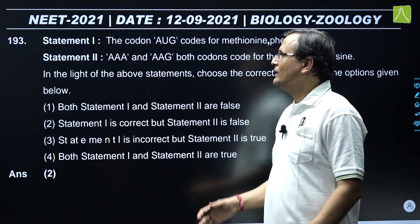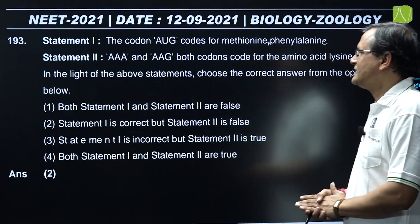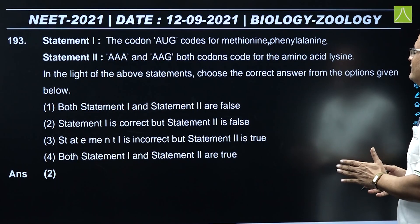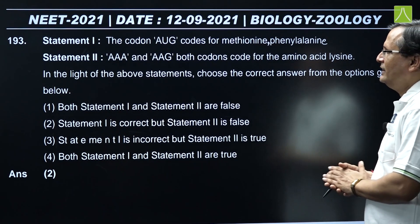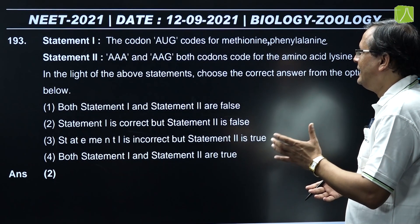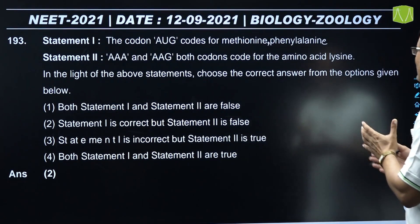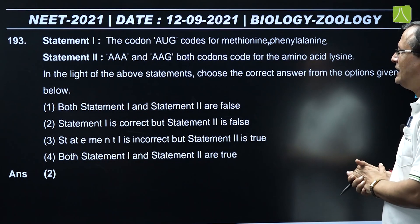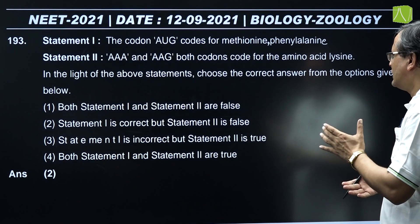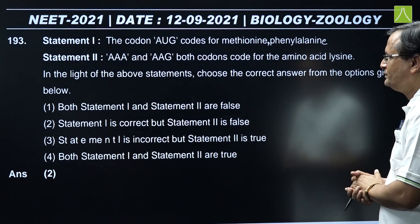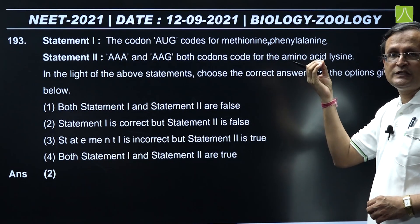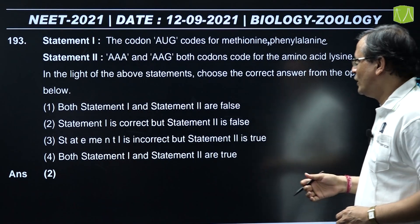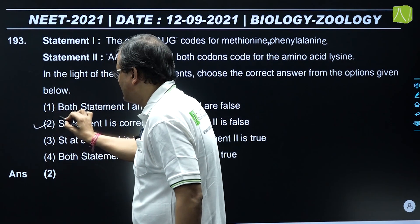Question 193: Statement 1 - the codon AUG codes for methionine and phenylalanine - this is wrong; AUG codes only for methionine. Statement 2 - AAA and AAG both codons code for the amino acid lysine - this is correct. So statement 1 is wrong and statement 2 is correct, which is given in option two. So the correct answer is option two.